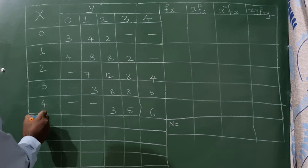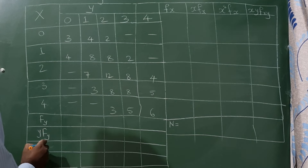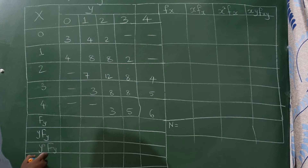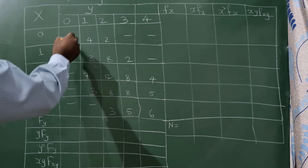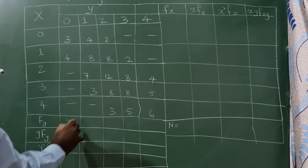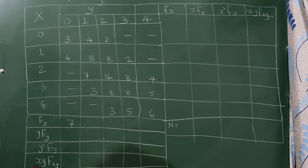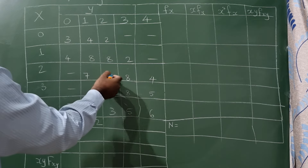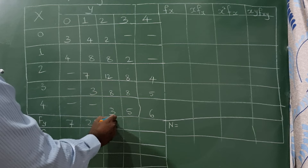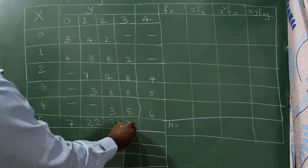On the y-side, we also write columns for fy, y·fy, y²·fy, and xy·fxy. Now adding the values: three plus four is seven, four plus eight plus seven plus three is twenty-two, and continuing to get totals of ten, twenty, thirty, and thirty-three.